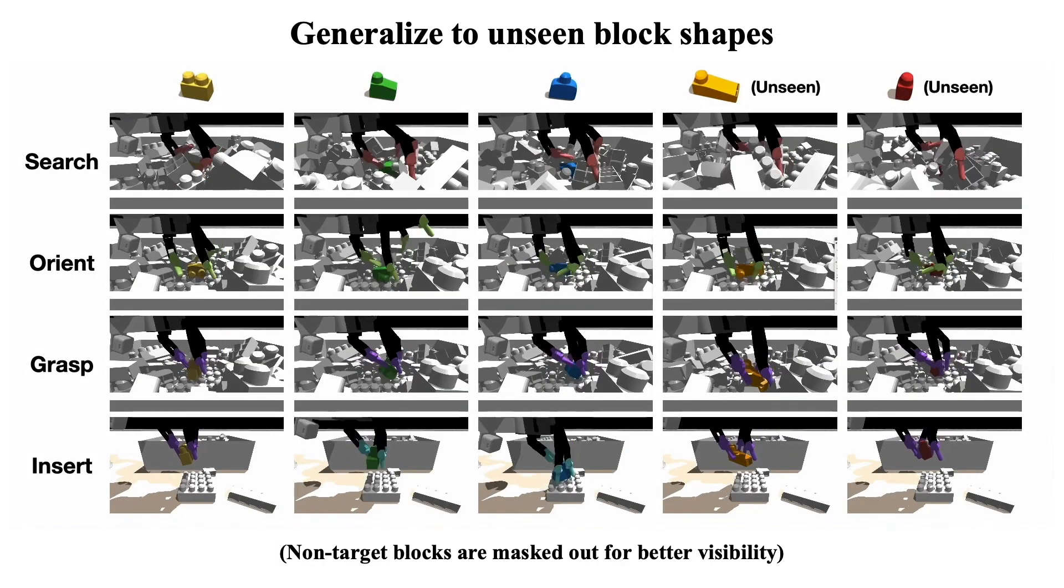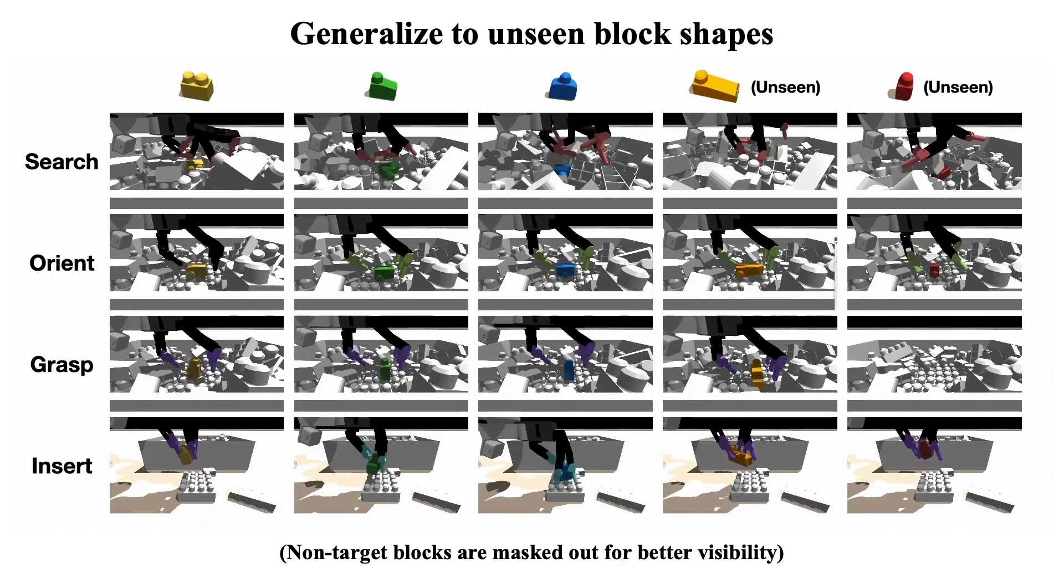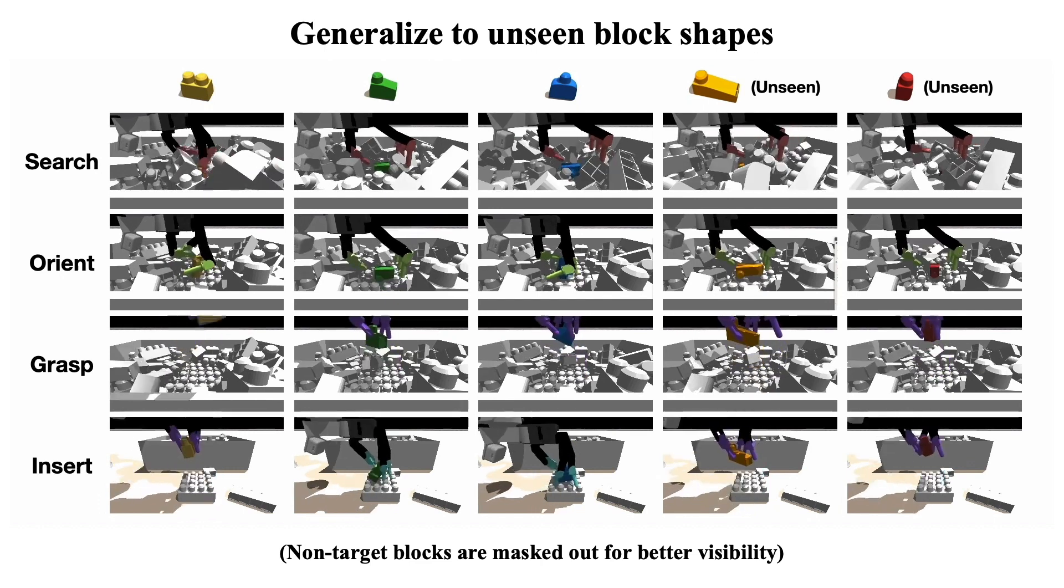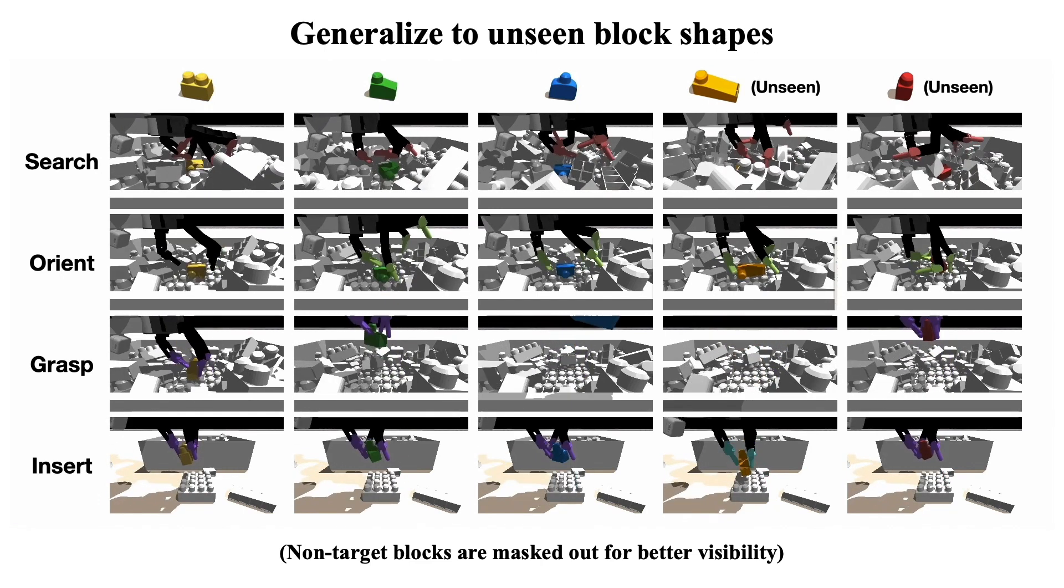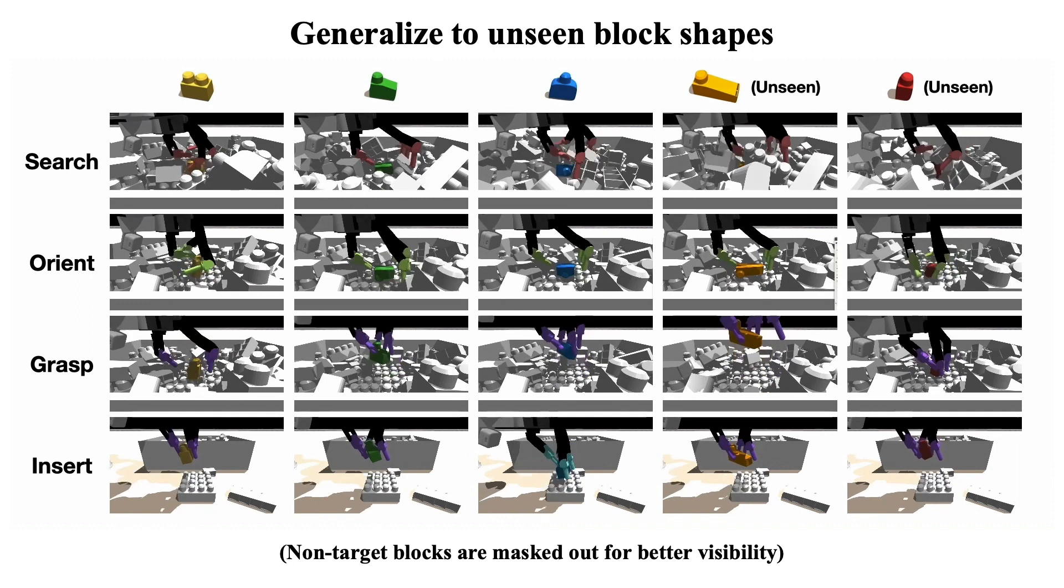By training each sub-policy with multiple Lego shapes, the learned policies are able to handle unseen block pieces. Here are the evaluation rollouts of each skill handling different types of Lego blocks.